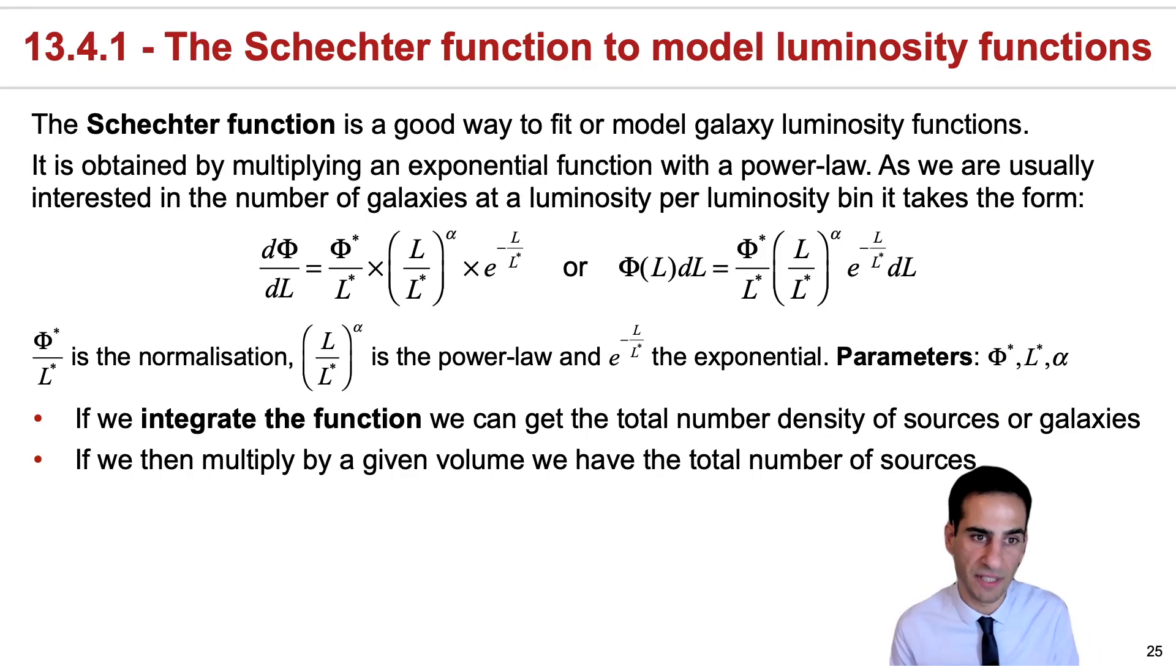Because of the form of the Schechter function, if we integrate the function, we can actually get the total number density of sources or galaxies within some luminosity range. And if we then multiply by a given volume, essentially, for example, the volume of the entire universe, then we can have the total number of sources or galaxies.